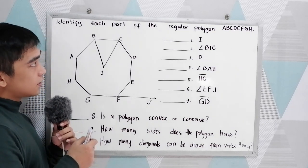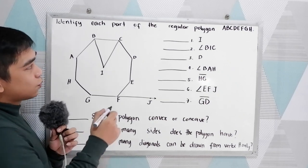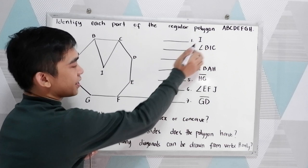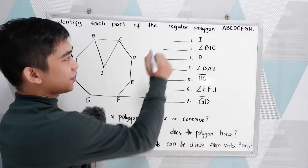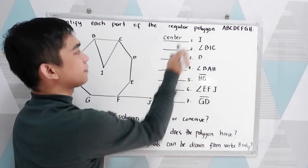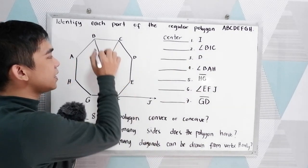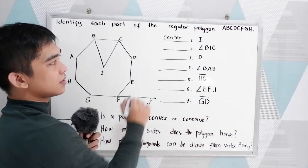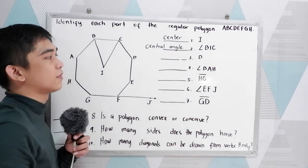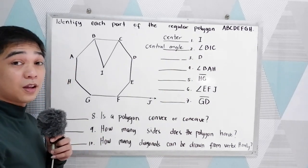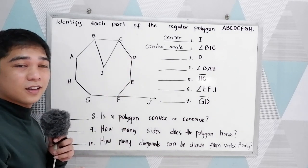Let us answer numbers 1 to 10. Number 1: what part of our polygon is I? The answer is center. Number 2: angle BIC is the central angle. Number 3: point D is the vertex.